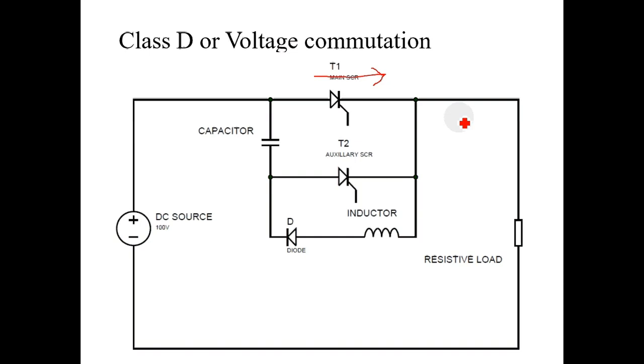In case of class D or voltage commutation, capacitor is used to commutate the main SCR.